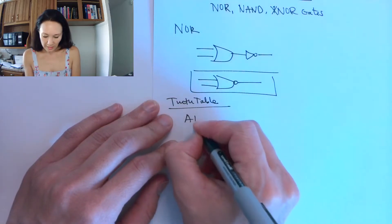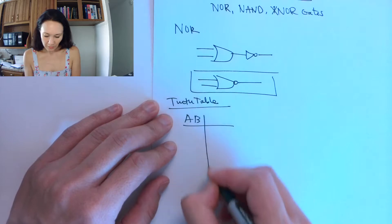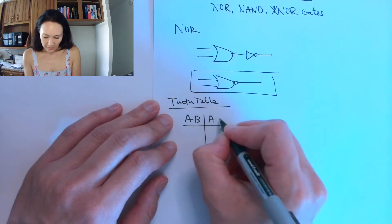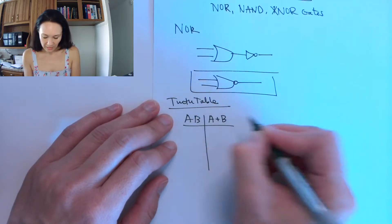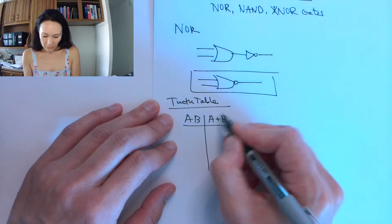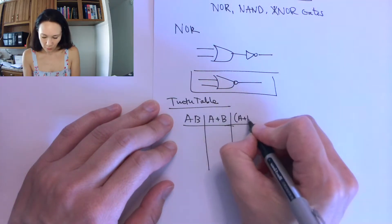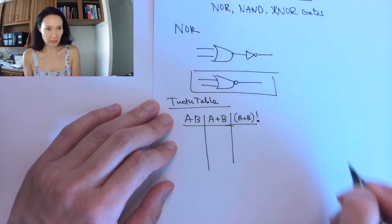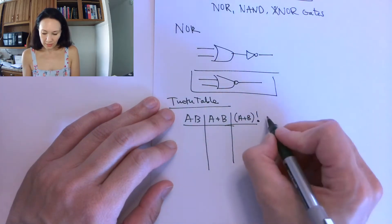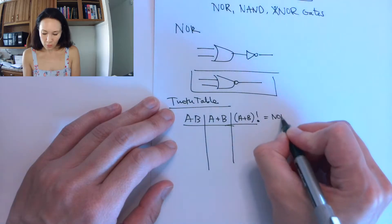If we have inputs A and B, if we were to OR these together, A or B, and then if we took that OR and we inverted it, A or B not, this is going to give us the output of a NOR gate.